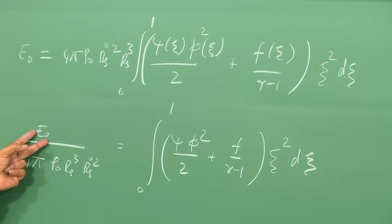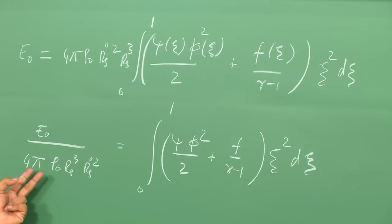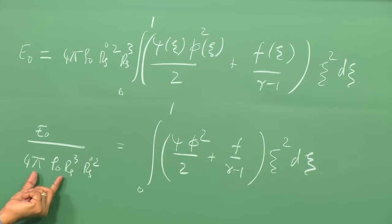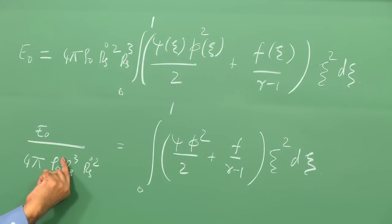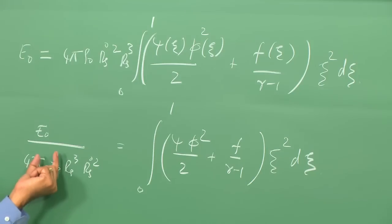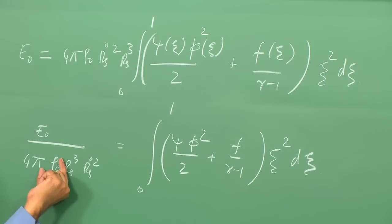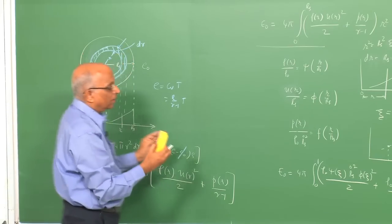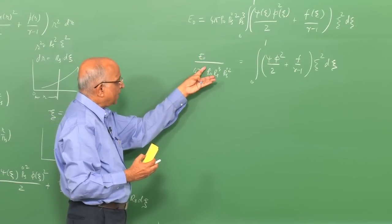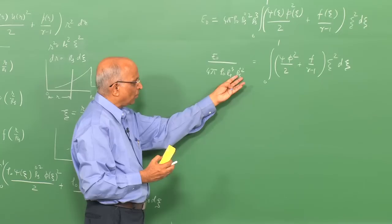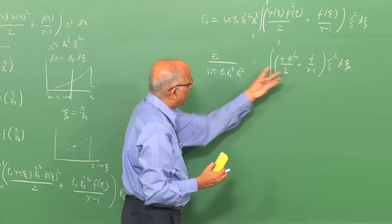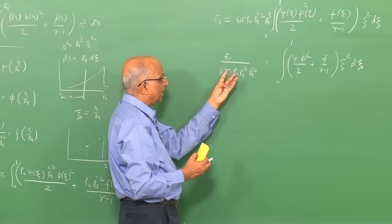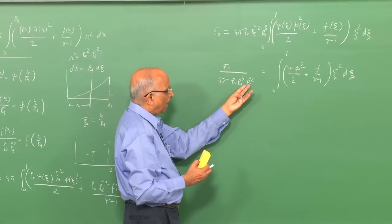This expression tells us that the energy deposited in a medium of density ρ₀ — with 4/3·π·Rs³ being the volume and thus ρ₀·Rs³ being proportional to the mass — indicates what fraction of the deposited energy goes into kinetic energy of the medium, evaluated at the blast velocity Ṙs². The integral on the right represents the part of the energy converted into kinetic energy, as if all particles travel at the blast wave speed Ṙs.